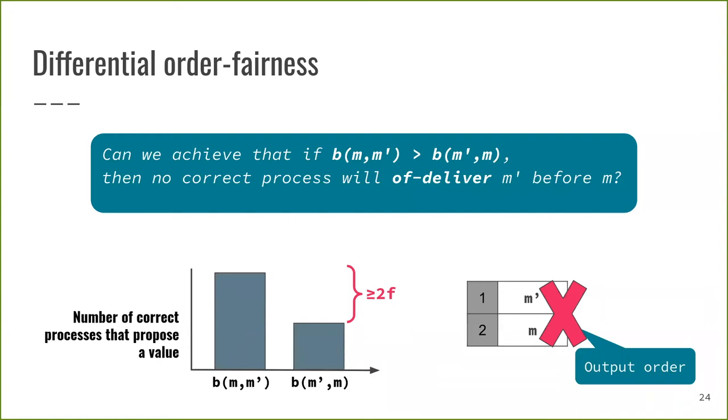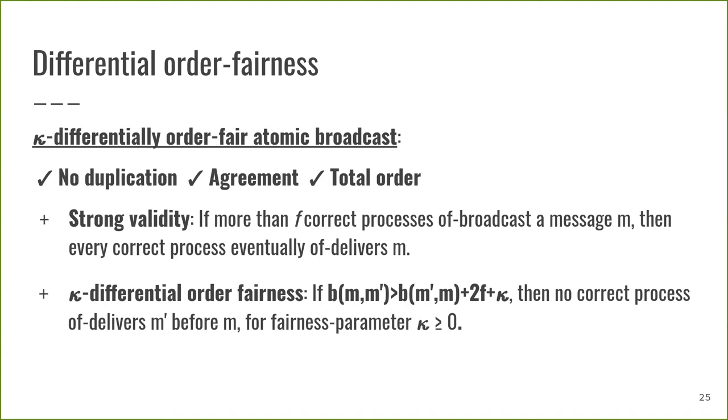Now, we want to achieve that if there are more correct processes that OF-Broadcast message M before M' than correct processes that OF-Broadcast M' before M, we can say this is achievable when B(M,M') exceeds B(M',M) by at least 2f. Hence, we define a kappa-differential order fair atomic broadcast that satisfies no duplication, agreement, total order and additionally strong validity and kappa-differential order fairness. That guarantees that if B(M,M') is larger than B(M',M) plus 2f plus kappa, then no correct process OF delivers M' before M.